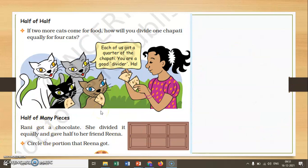Rani has got the chocolate. She divided it equally and gave it to her friend Reena. If you don't know how to divide it, what to do? One part Rani's, second part Reena's.